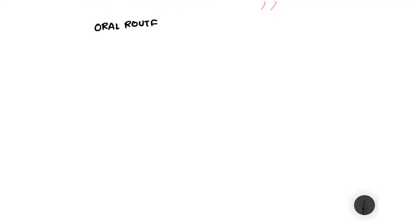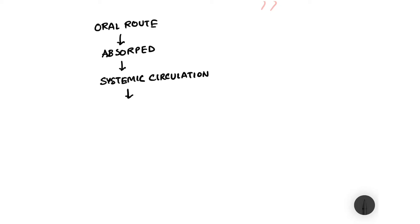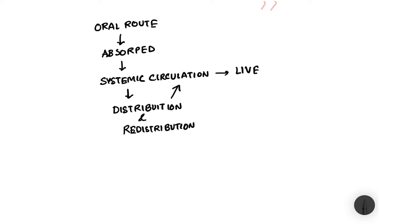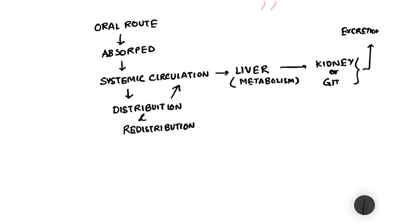To summarize: after giving the drug orally, it gets absorbed, then enters systemic circulation, undergoes distribution and redistribution, returns to systemic circulation, goes to the liver for metabolism, and finally to the kidneys or GIT for excretion. It is worth noting that some drugs, after getting absorbed, go to the liver first for first pass metabolism before entering systemic circulation — we will discuss that in detail in subsequent videos.